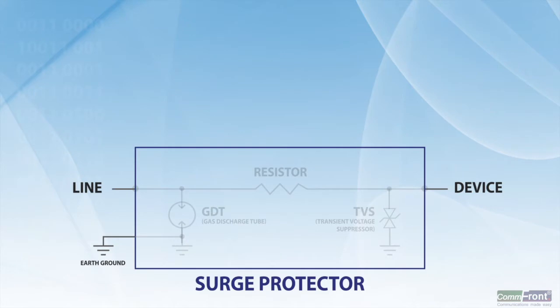Surge protectors are mainly used for protecting power and data lines against electrical surges and spikes, including those caused by lightning. The main function of a surge protector is to limit the voltage introduced to an electrical device by either blocking or shorting to ground any voltages above a safe threshold.